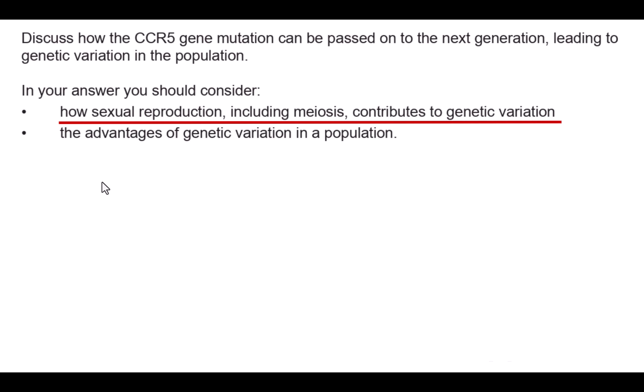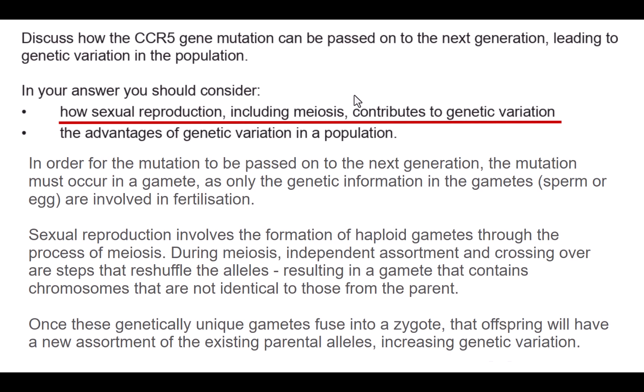To answer that first part of the question: in order for a mutation to be passed on to the next generation, the mutation must occur in a gamete, as only that genetic information is passed on through fertilization. Sexual reproduction involves the formation of haploid gametes through the process of meiosis. During meiosis, independent assortment and crossing over are steps that reshuffle the alleles, resulting in a gamete that contains chromosomes not identical to those from the parent. Once these genetically unique gametes fuse into a zygote, that offspring will have a new assortment of the existing parental alleles, increasing genetic variation.